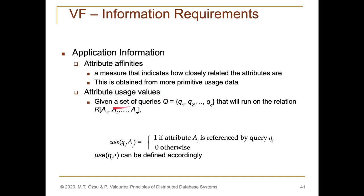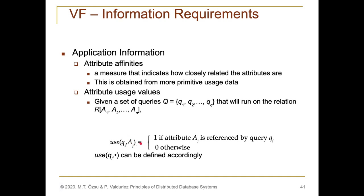To formalize attribute usage values, let's say we have a set of queries Q constituted of q1 up to qq, which will run on relation R that has attributes a1 up to an. The query matrix of queries Q can be calculated as follows: the usage of qi on attribute aj is 1 if attribute aj is referenced by query i, otherwise it will be 0. So whenever a query accesses some attribute aj, the corresponding use value is 1, otherwise it will be 0. This equation produces an attribute usage matrix in general.